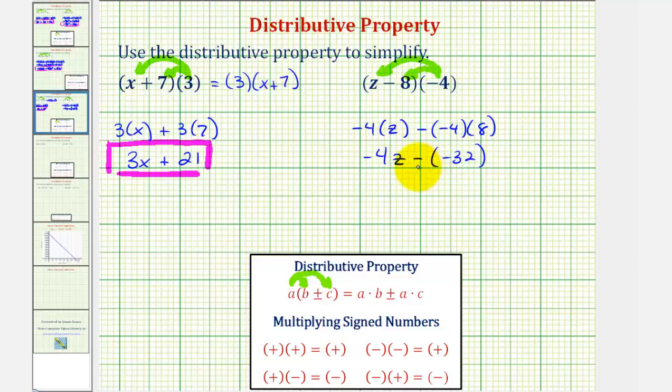Simplifying one more time, subtracting a negative is the same as adding a positive. So this would simplify to negative four z plus thirty-two.